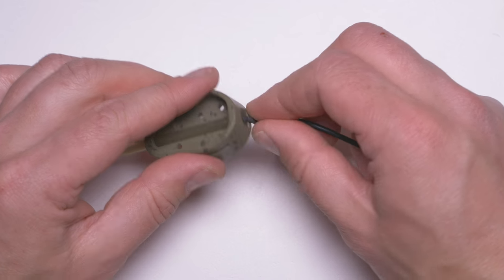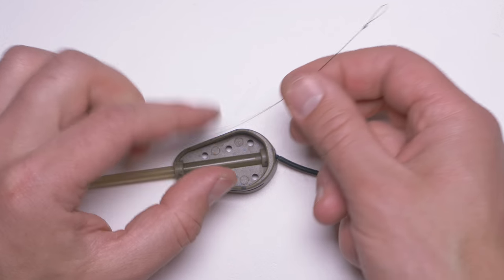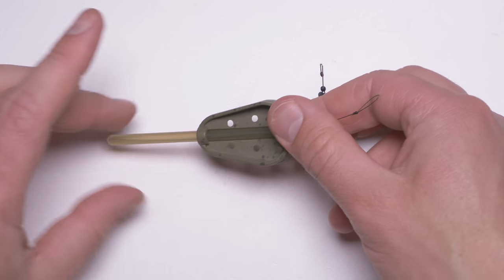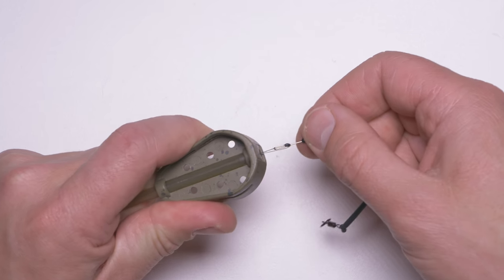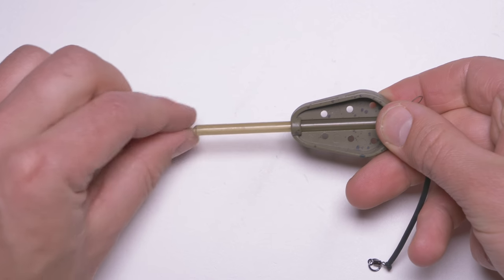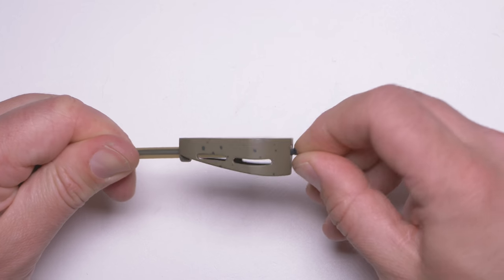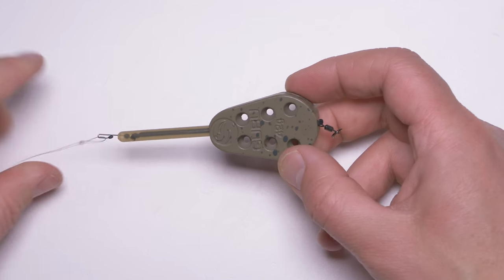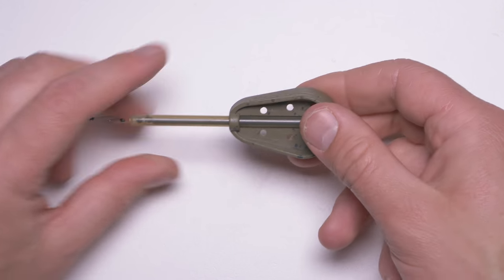Now all I have to do is put my elastic back. I won't be able to do that without any help, so I will just use a very small piece of line with a loop just to help me pull the elastic inside.